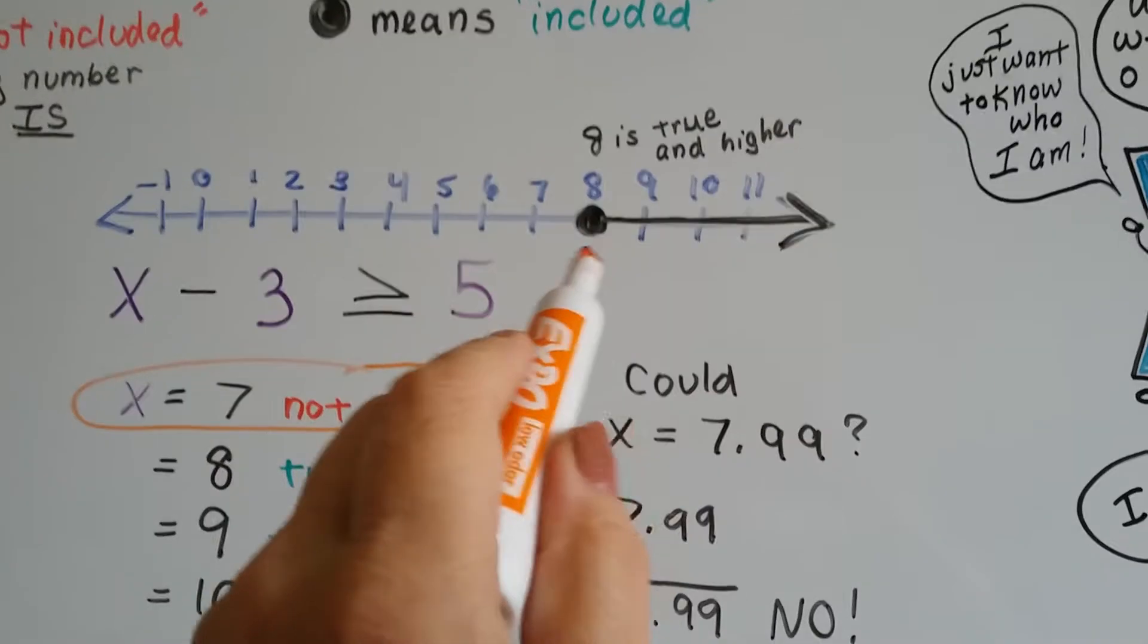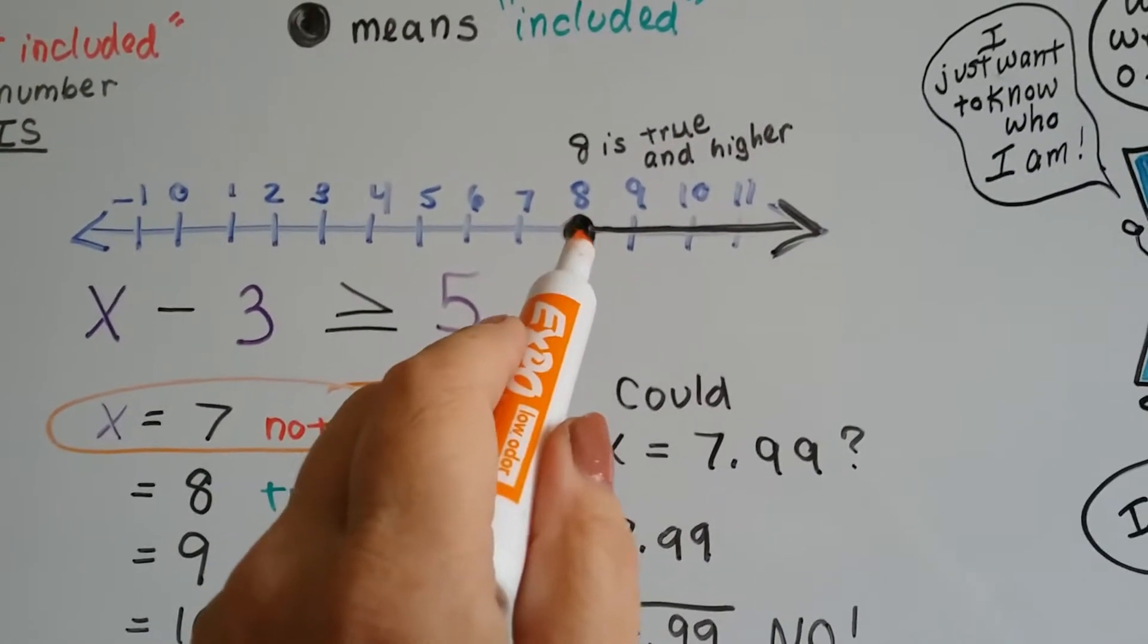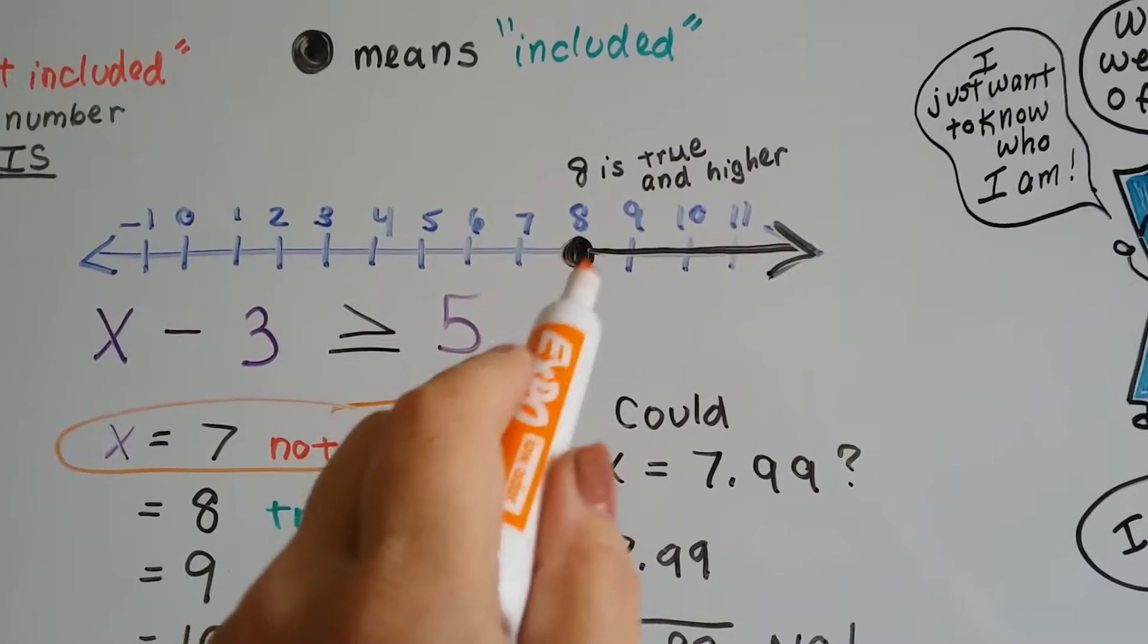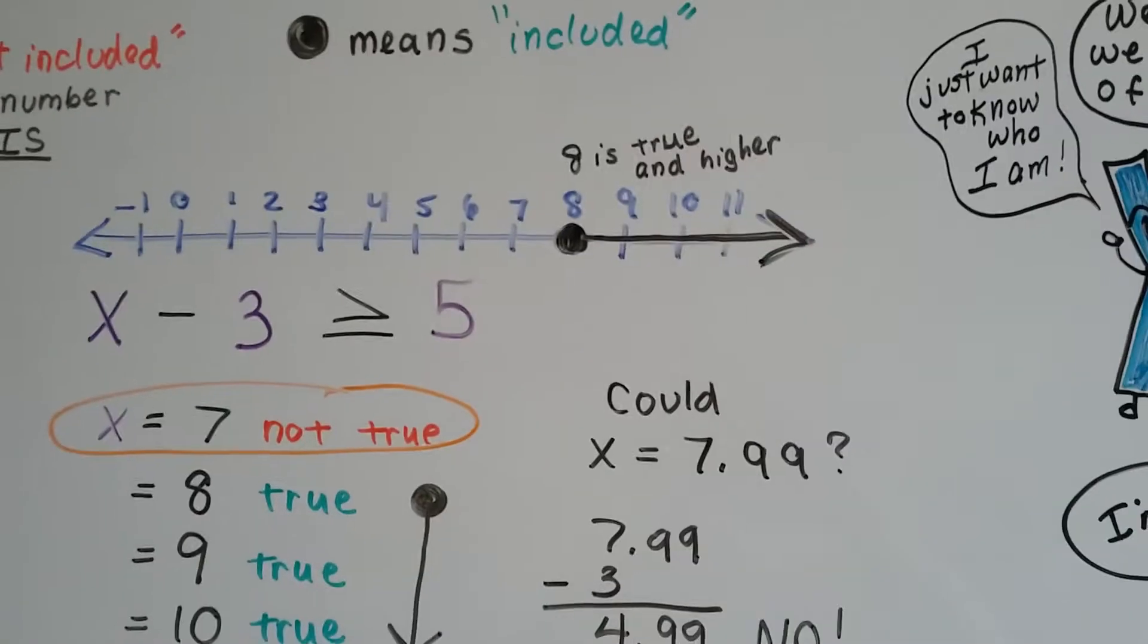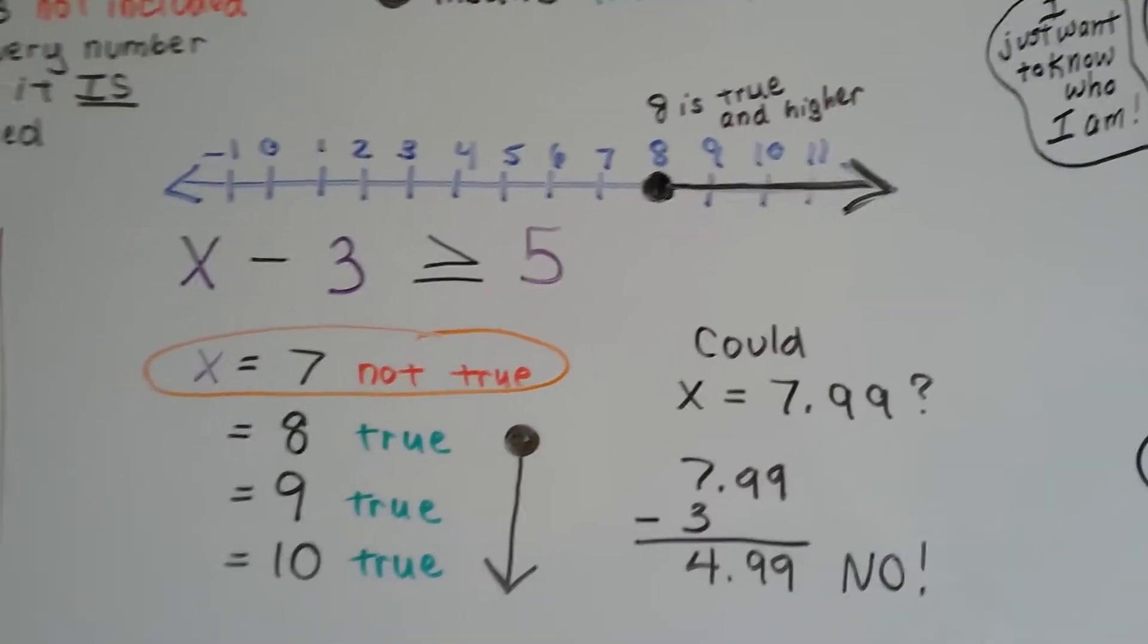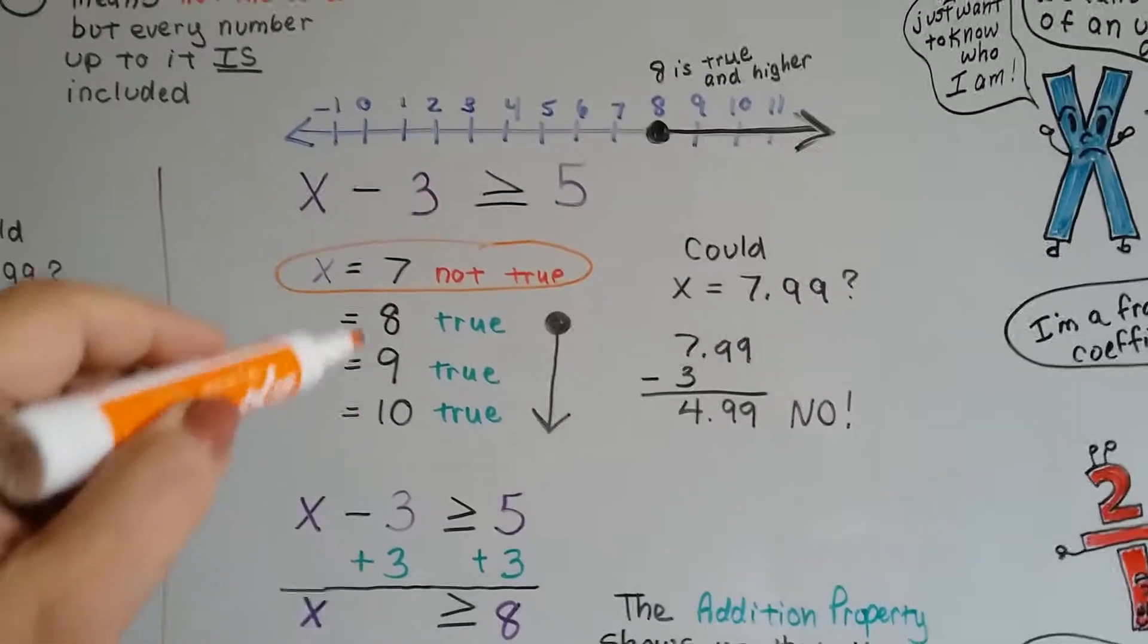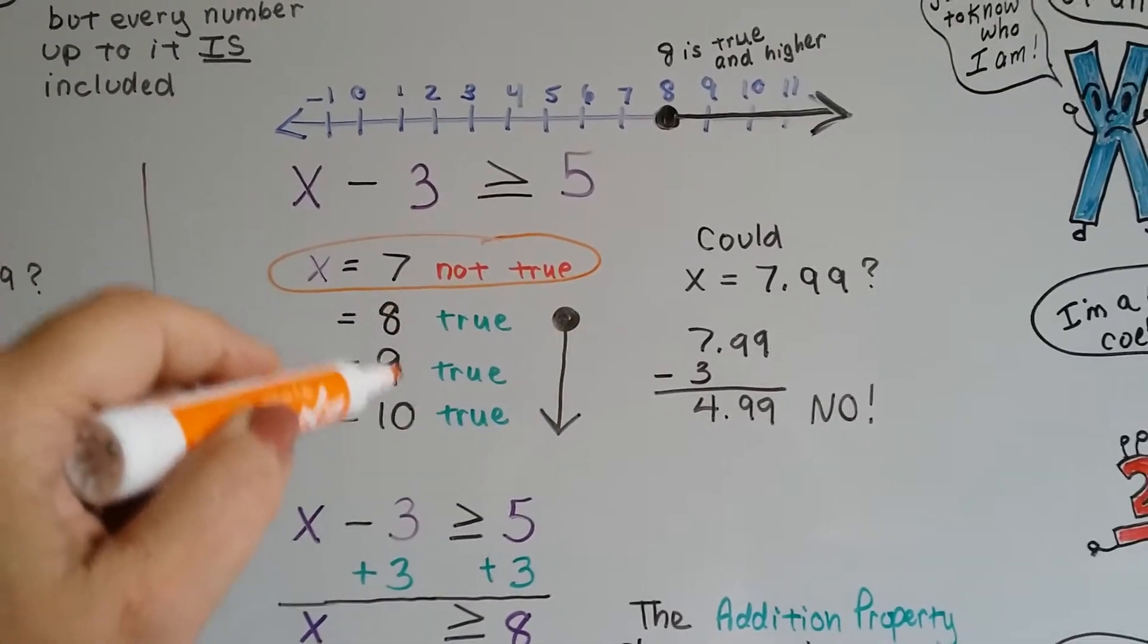So we use our filled-in dot to show only 8 or bigger is included. And on our number line, we put our filled-in dot 8 to show 8 is true and included, and every number larger than that, every number higher, is included. Every number getting bigger than 8 is included. 8, 9, 10.